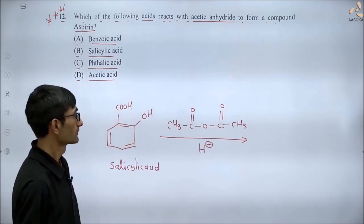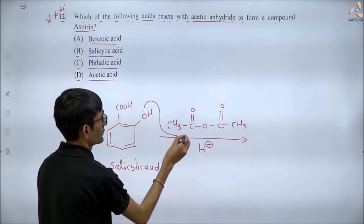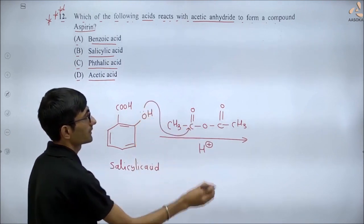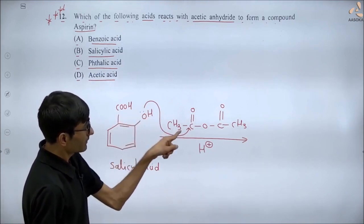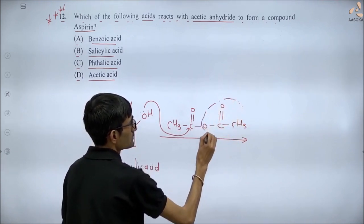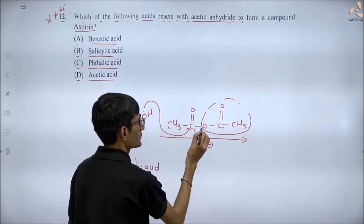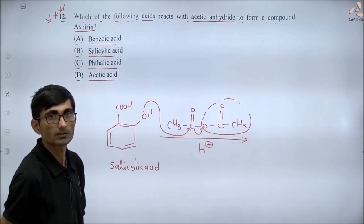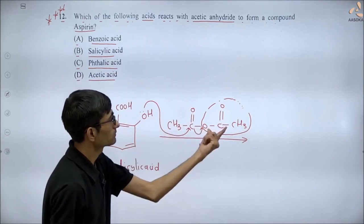What happens in the reaction is that oxygen donates its lone pair to this carbon. Why? Because this carbon is electrophilic. Now this group will leave by breaking the bond. Oxygen will connect as COC and this whole group will leave.